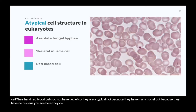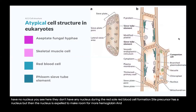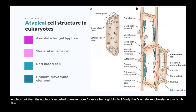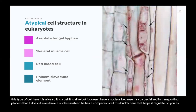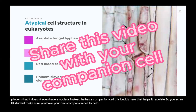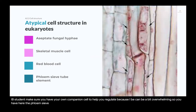You can see red blood cells here with no nucleus at all. During red blood cell formation, the reticulocyte precursor has a nucleus, but then the nucleus is expelled to make room for more hemoglobin. Finally, the phloem sieve tube element is alive — it is a cell — but it doesn't have a nucleus because it is so specialized in transporting phloem. Instead, it has a companion cell, a buddy that helps it regulate. So as an IB student, make sure you have your own companion cell to help you — because IB can be a bit overwhelming. The phloem sieve tube element and companion cell are BFF: best friends forever.